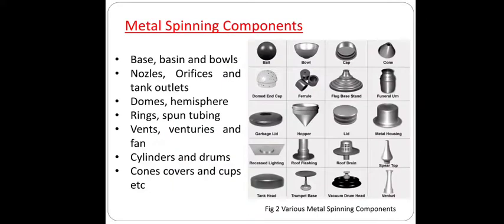Metal spinning components include: bases, basins, bowls, nozzle orifices, tank outlets, domes, hemispheres, rings, spoon tubing, vents, venturis, fans, cylinders, drums, cones, covers, and cups. These are the various components which can be produced by the metal spinning process.